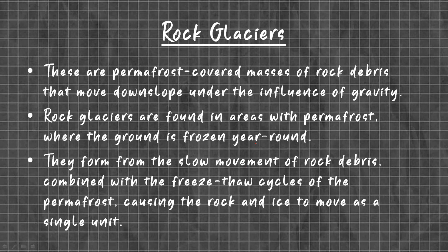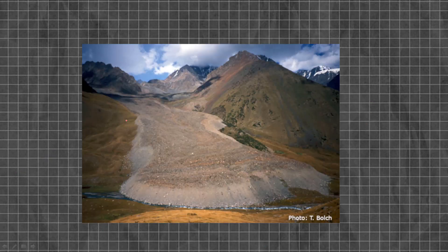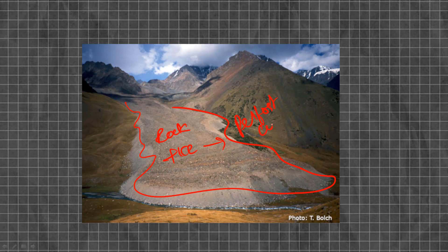Rock Glaciers are permafrost-covered masses of rock debris that move downslope under the influence of gravity. They are found in areas with permafrost, where the ground is permanently frozen. They form from the slow movement of rock debris combined with freeze-thaw cycles of permafrost, causing the rock and ice to move as a single unit. As you can see in this picture, a rock glacier is formed by rocks and ice. Due to the permafrost cycle, ice between the rocks accumulates, freezes and melts, and when it starts to melt, the rock debris moves downwards under gravity, forming rock glaciers.